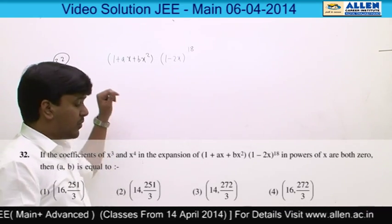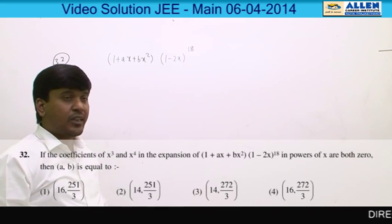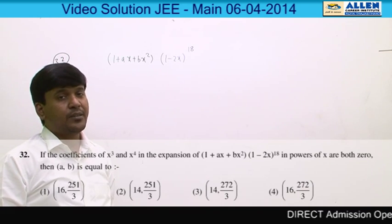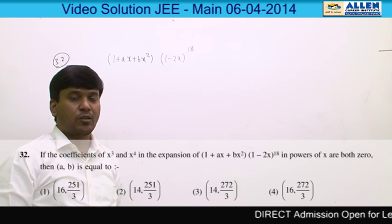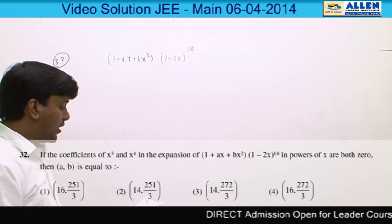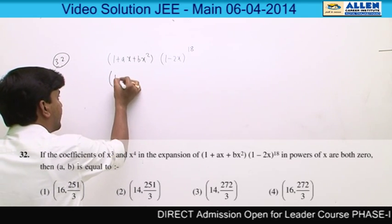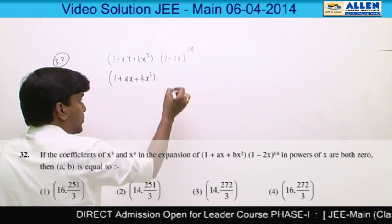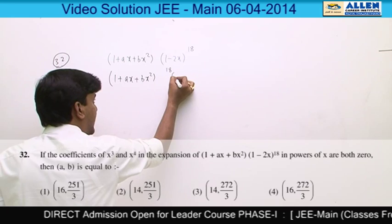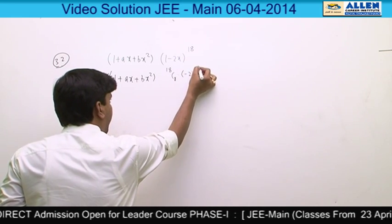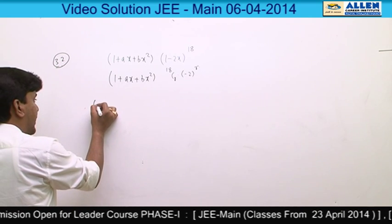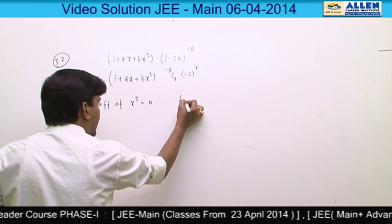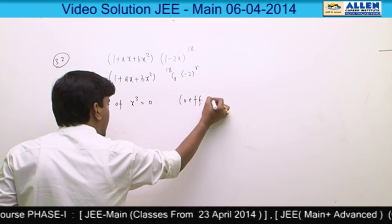In question number 32, we have been given that the coefficients of x³ and x⁴ in this expansion are 0. We are going to first find the coefficient of x³, then the coefficient of x⁴, and equate them to 0. Finding the coefficient of xʳ in the expansion: it is 18Cᵣ × (−2)ʳ. From here we can set the coefficient of x³ equal to 0 and the coefficient of x⁴ also equal to 0.